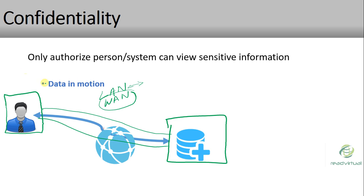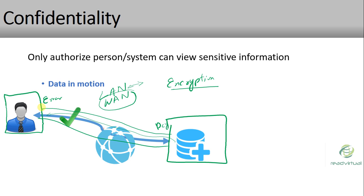To secure data in motion, we will use encryption algorithms — such as SHA-256, MD5, or whatever encryption we choose. We encrypt the data leaving the end user and decrypt it at the data center, and do the same in the reverse direction. This ensures that our communication is properly secure and comes from an authorized source.